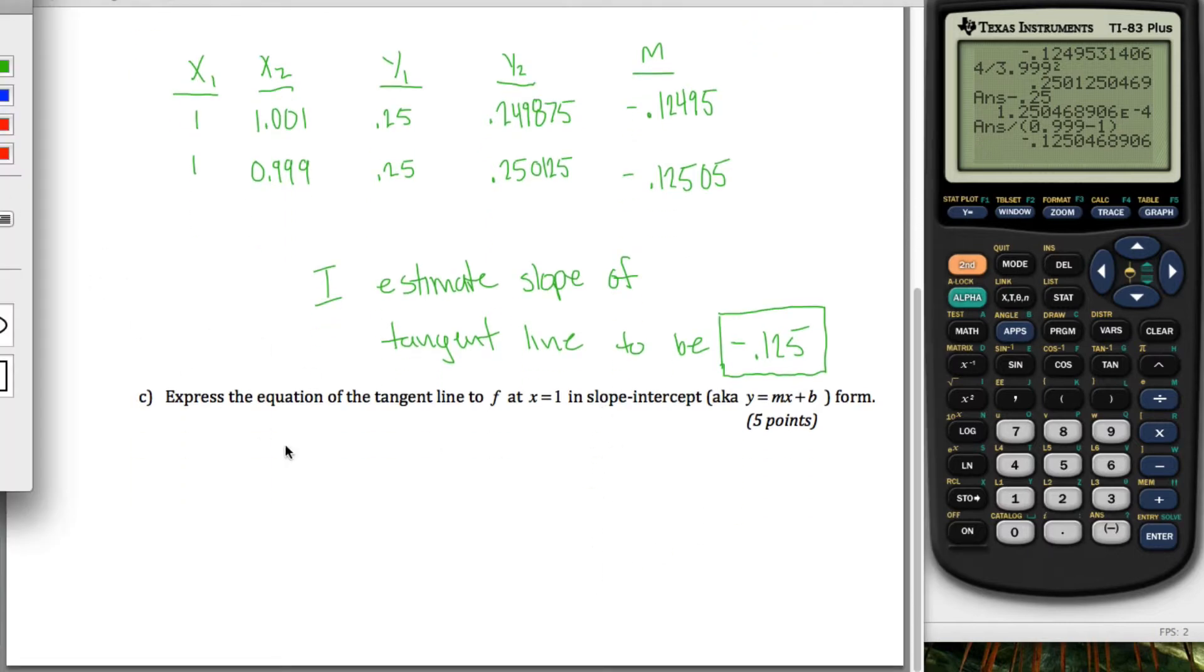All right, one more step. Now it wants me to take the slope of the tangent line and come up with the equation of the tangent line, and the way you do that is by using this formula. It's called point slope form of a line, and you just plug everything in. We know that m is going to be negative .125, and we know that x1 is given to us this value 1, and y1, we've already calculated that a few times, is .25.